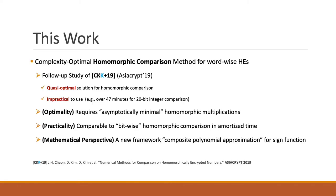Let me start with some brief introduction of homomorphic encryption and the motivation of our work. In this work, we propose complexity-optimal homomorphic comparison methods for wordwise homomorphic encryption schemes. This is the follow-up study of our previous work presented at last year's AsiaCrypt. In the previous work, we only achieved a quasi-optimal solution for homomorphic comparison and it was even quite impractical. But in this work, we overcome these weaknesses.